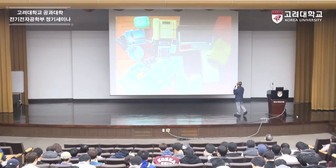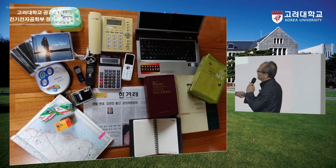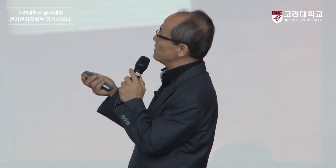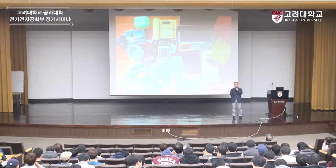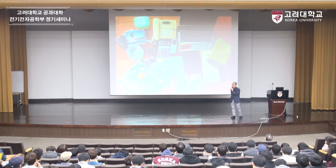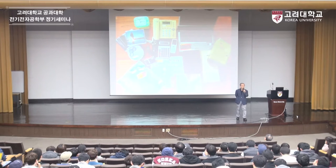저희 서랍 속에 있는 물건들을 꺼내봤습니다. 지도책, 필름, 카메라, CD 플레이어, MP3, 녹음기, 계산기 등을 다 꺼내봤습니다. 이게 다 어디에 들어있을까요? 바로 여러분의 손 안에 있죠. 여러분 지금 손에 들고 있는 스마트폰 안에 다 들어있습니다.